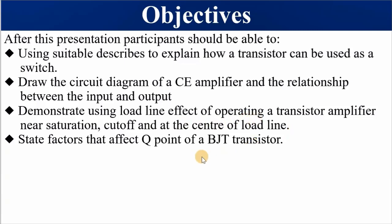You must also be able to state the factors that affect the Q-point of a BJT transistor — just four of them. Let us proceed.